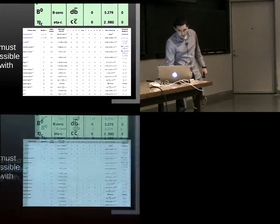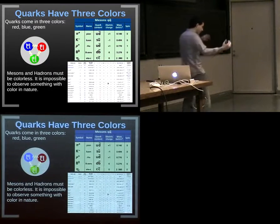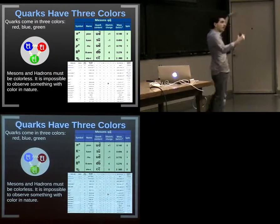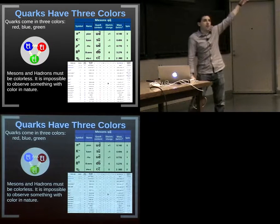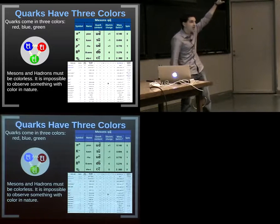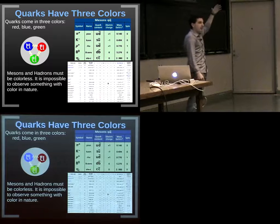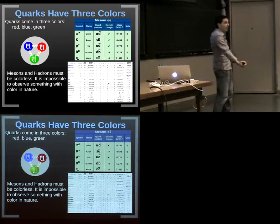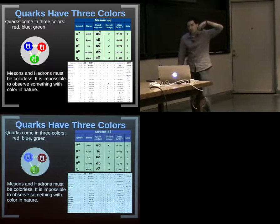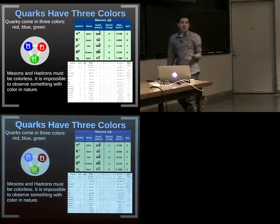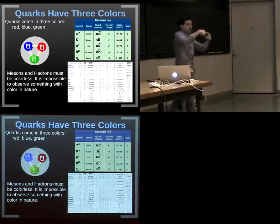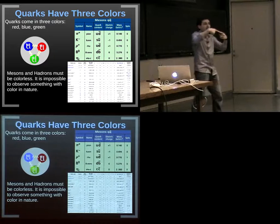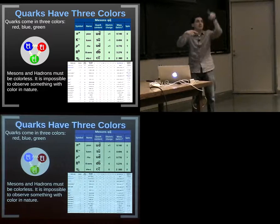The strong nuclear force is different from gravity and electromagnetism. Gravity and electromagnetism get weaker with distance. The strong force acts the opposite way — the farther two quarks of different color get from each other, the stronger the force between them.